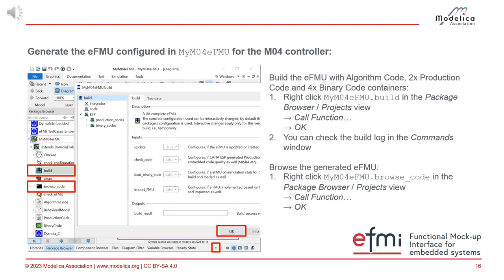So how do we build? You open the extensio, right-click the build function, and say 'call function'. Then just say OK, and it will build everything. This will take a while — algorithm code generation goes very fast, production code generation is also fast, but building the binaries takes a moment. Remember, you're building four binaries.